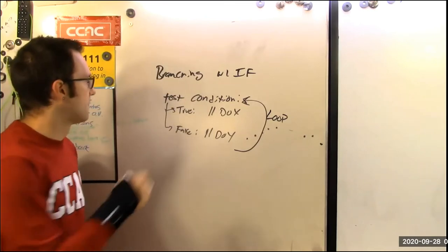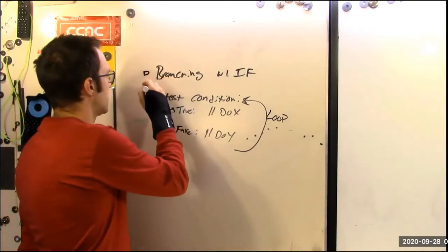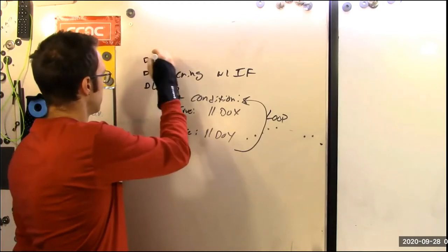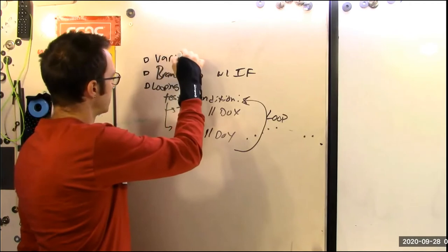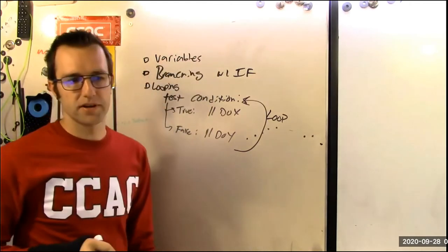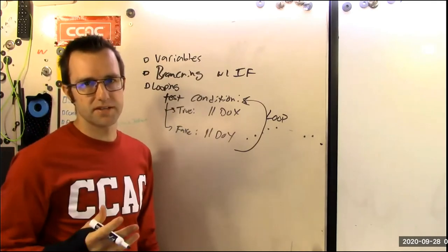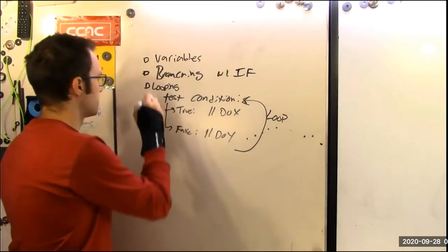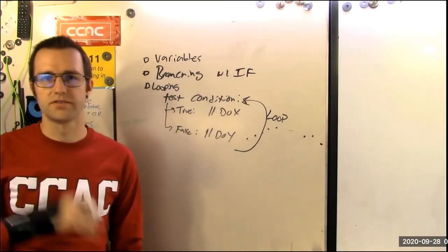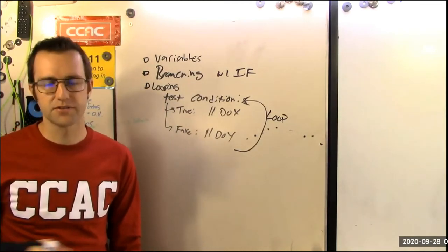And so at the base level, then branching and looping, I guess we could say variables. So can you store data and get it back? Can you decide how to operate on those variables based on test conditions? And then can we reuse code or can we repeat things for some predetermined number of cycles or amount of time?